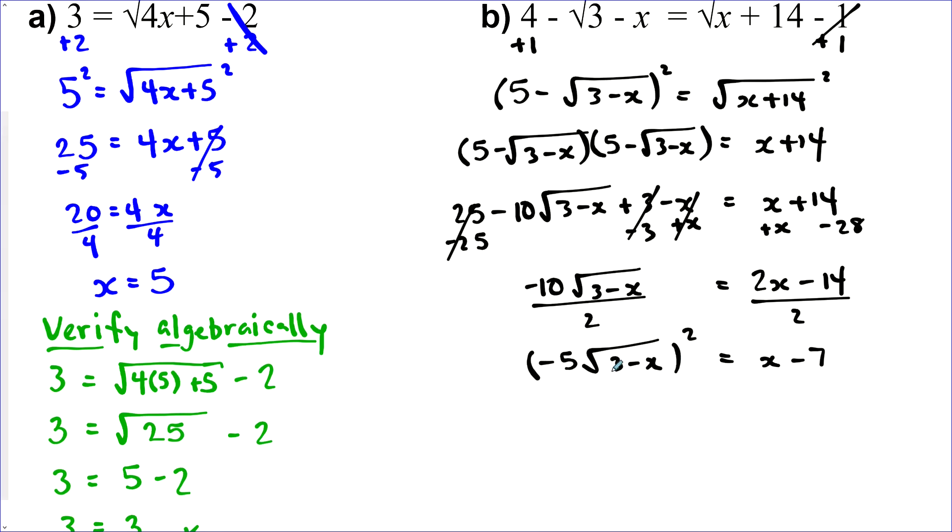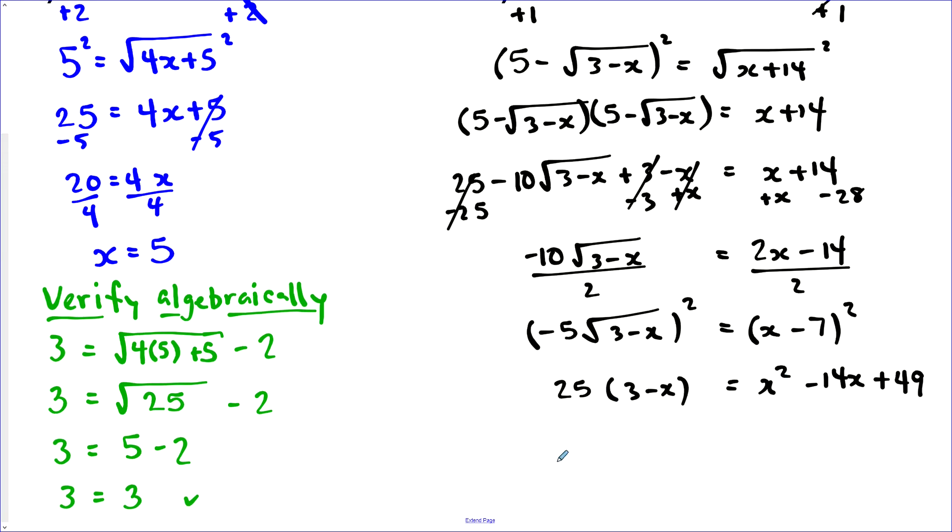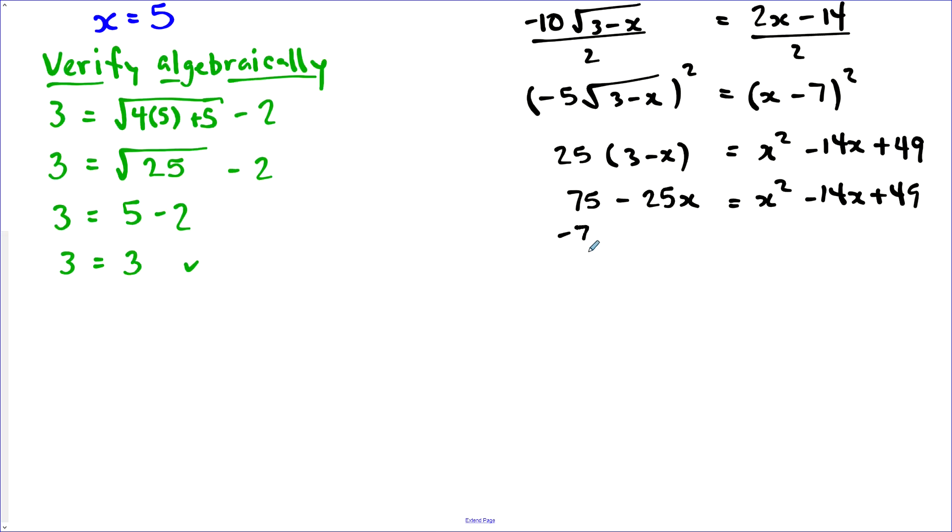Now I can square both sides. And this time, this is not a binomial. It doesn't have a plus or minus, so I'm just squaring the individual terms. And on this side, it is a binomial, so I need to expand that out. So this would be 25, 3 minus x. It's just squaring the individual terms. And on this side, x squared minus 14x plus 49. Now we need to multiply this out and collect everything up to one side. So this would be 75 minus 25x. On this side, I didn't do anything. Now I can minus 75 on both sides and add 25x on both sides. And then I get 0 is equal to x squared plus 11x minus 26. And this is factorable, so that's how I'll solve this. x plus 13 and x minus 2.